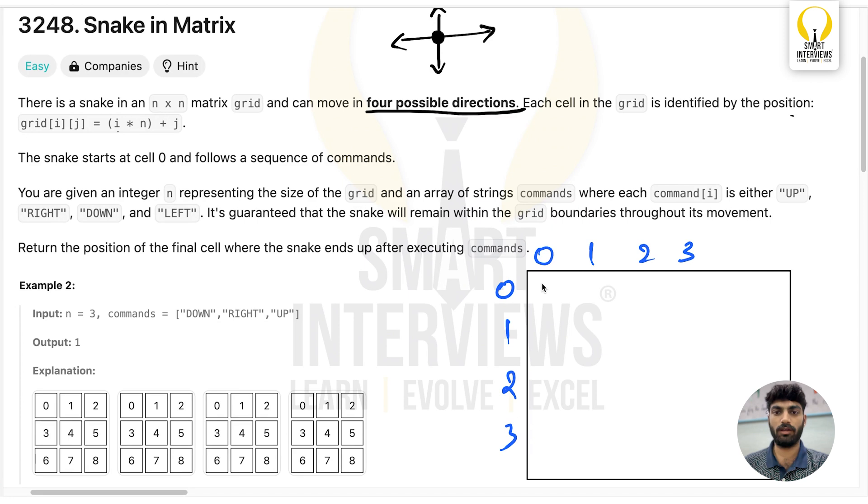For cell (0,0), let's substitute in i×n + j. So it's 0×n + 0, which means this is cell 0. Next is 1, 2, 3, and so on. What will be the position for (1,0)?